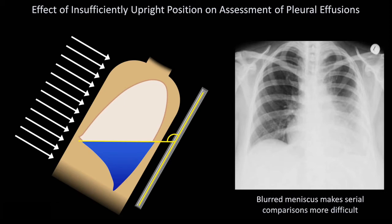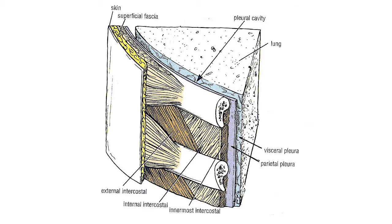Now let's look at pneumothorax. In chest radiology imaging with pneumothorax, we need to understand the pleural space and the difference between the parietal and visceral layers of the pleura, as well as the fact that there is always fluid in the pleural chamber. When you have a pneumothorax, there is a rupture of the lung parenchyma.